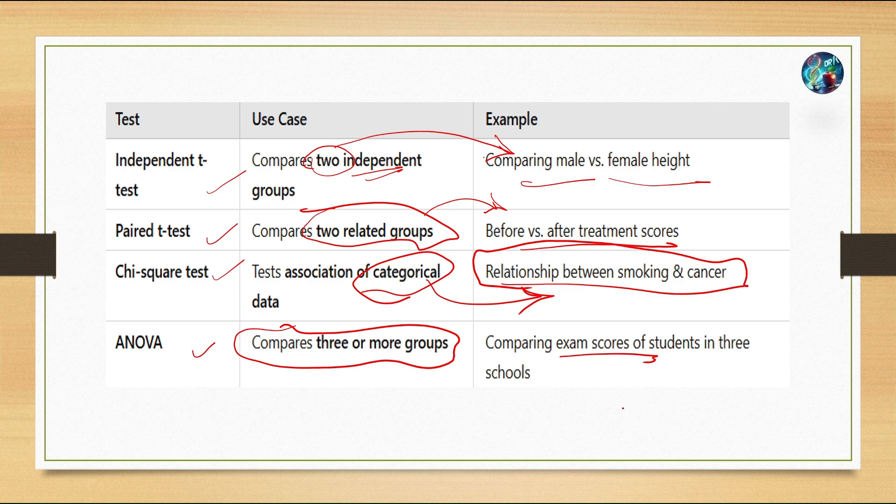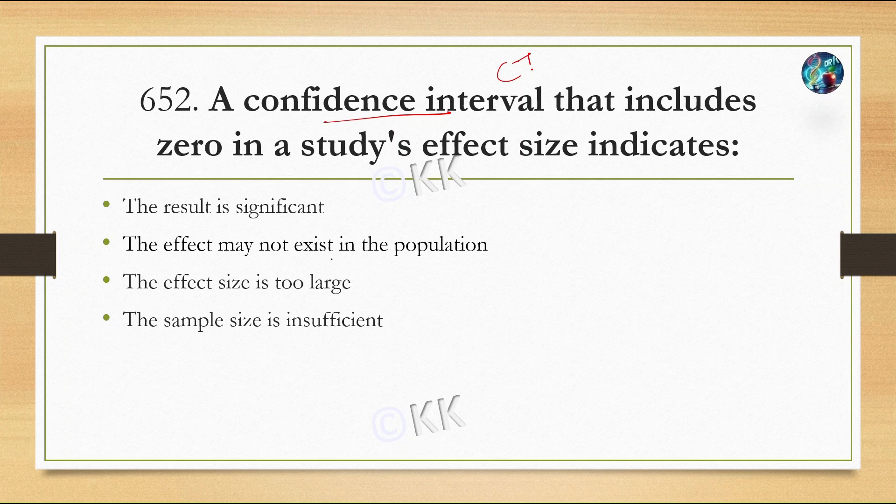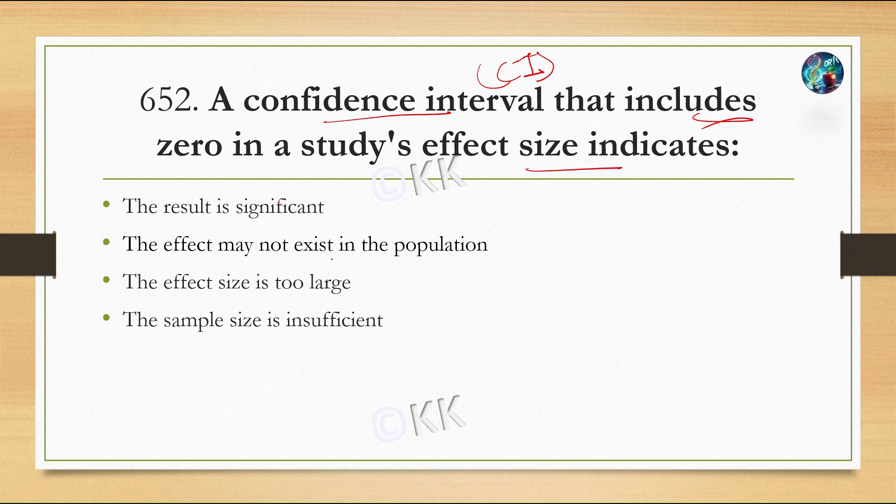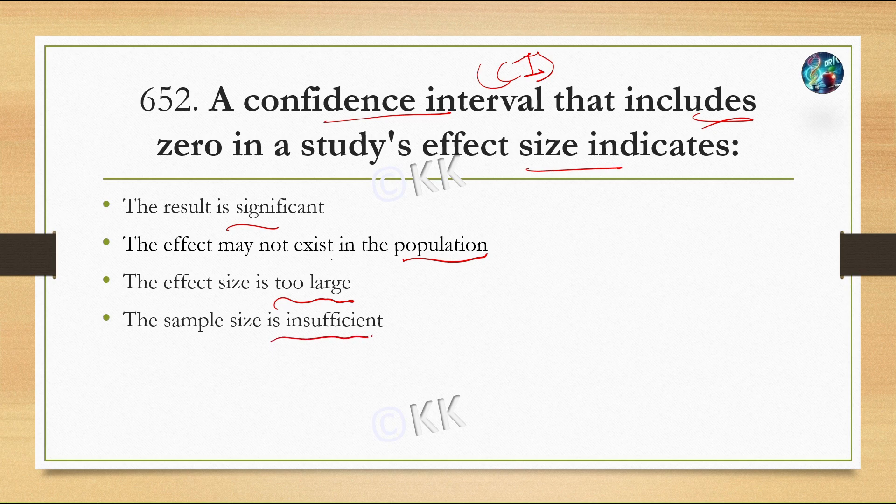Next question: A confidence interval that includes zero in a study's effect size indicates: Option A, the result is significant; Option B, the effect may not exist in the population; Option C, the effect size is too large; Option D, the sample size is insufficient. The correct option is Option B, the effect may not exist in the population.